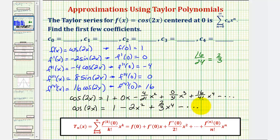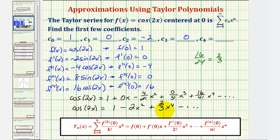Now we can identify the coefficients c₀ through c₄. c₀ = 1 (degree-zero term). c₁ = 0 (no degree-one term). c₂ = −2. c₃ = 0 (no degree-three term). c₄ = 2/3. Taking these first three nonzero terms forms our Taylor polynomial — or, since it's centered at zero, our Maclaurin polynomial.